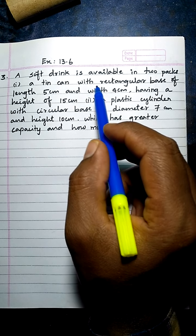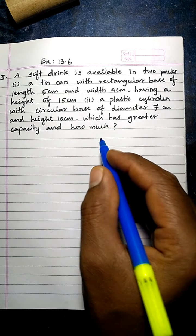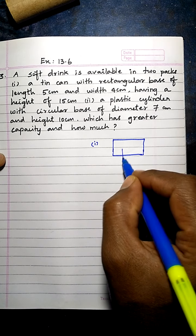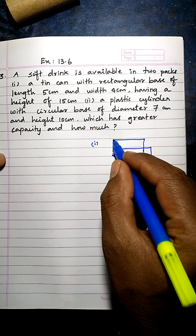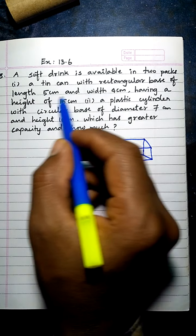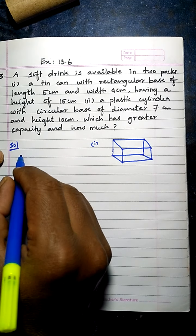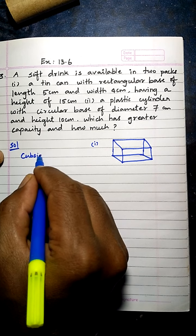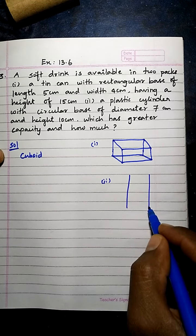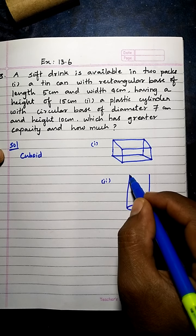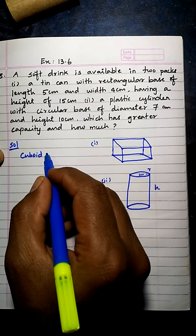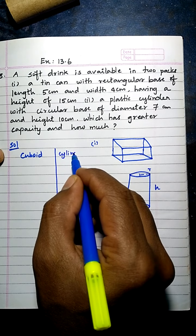In case one, the tin has a rectangular base, which means the tin shape is a cuboid. Let's draw one tin with a rectangular base shape — that's the cuboid shape. In the second case, we have a plastic cylinder with a circular base. Let's draw this second container. This is the radius and this is the height.